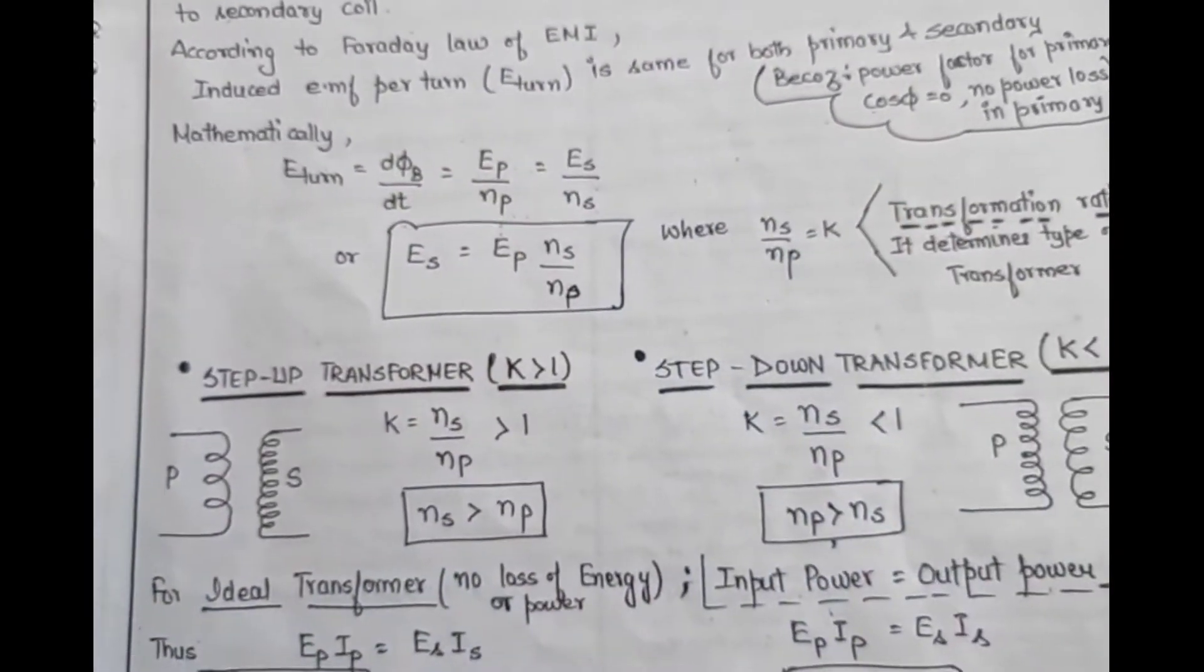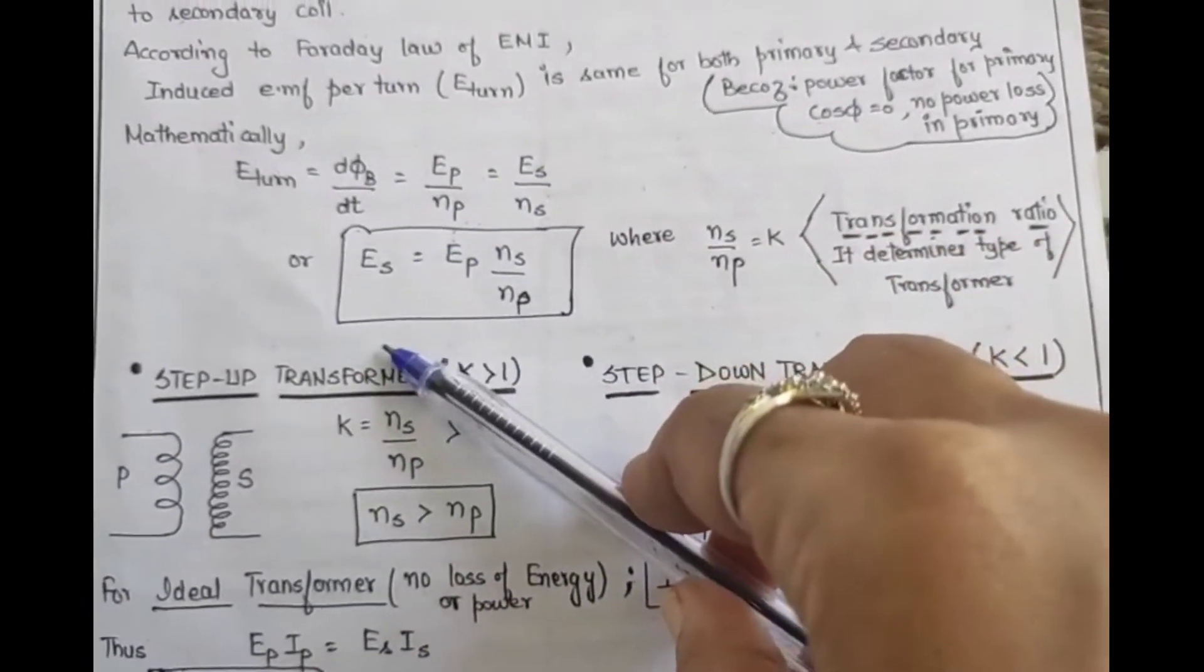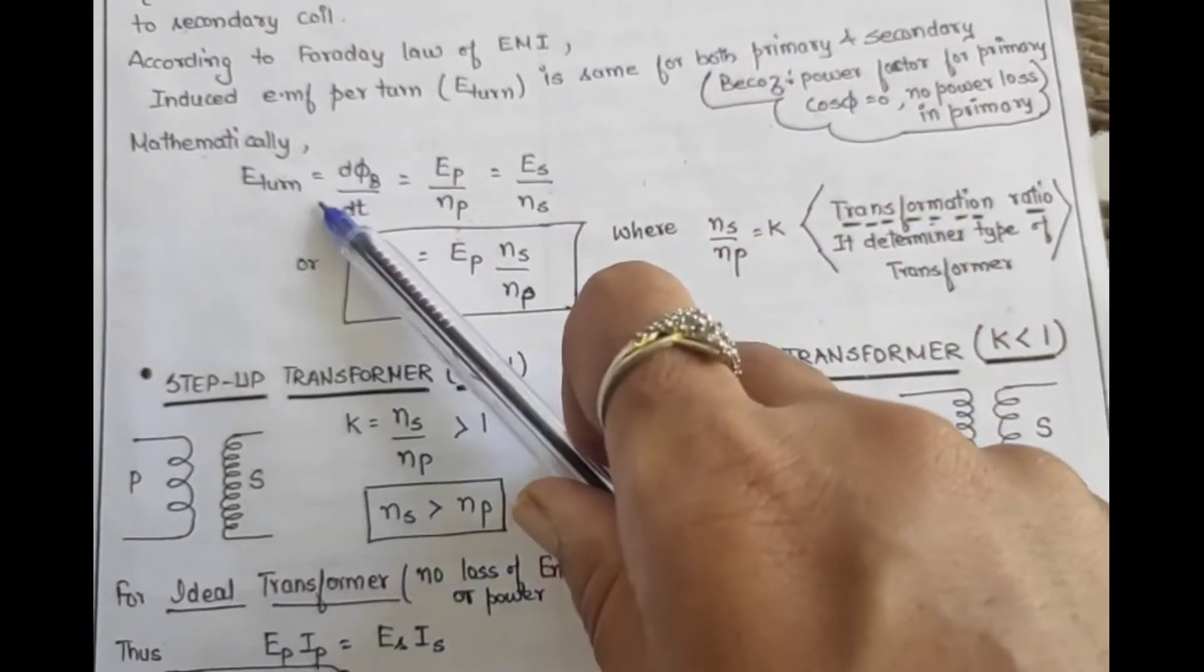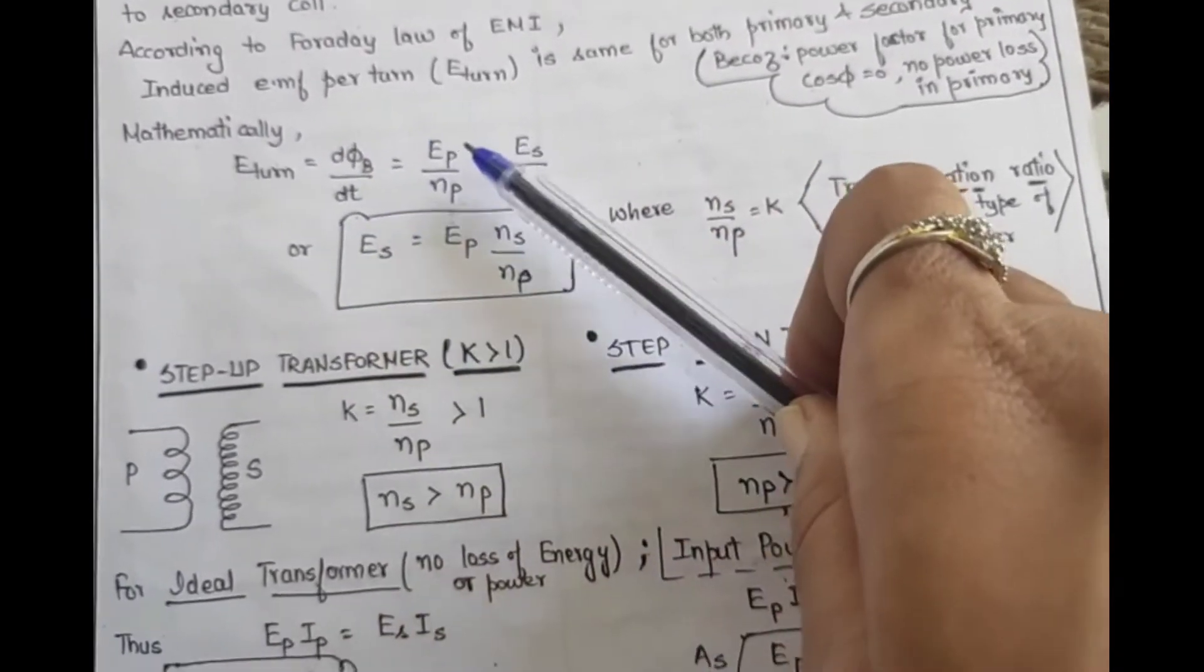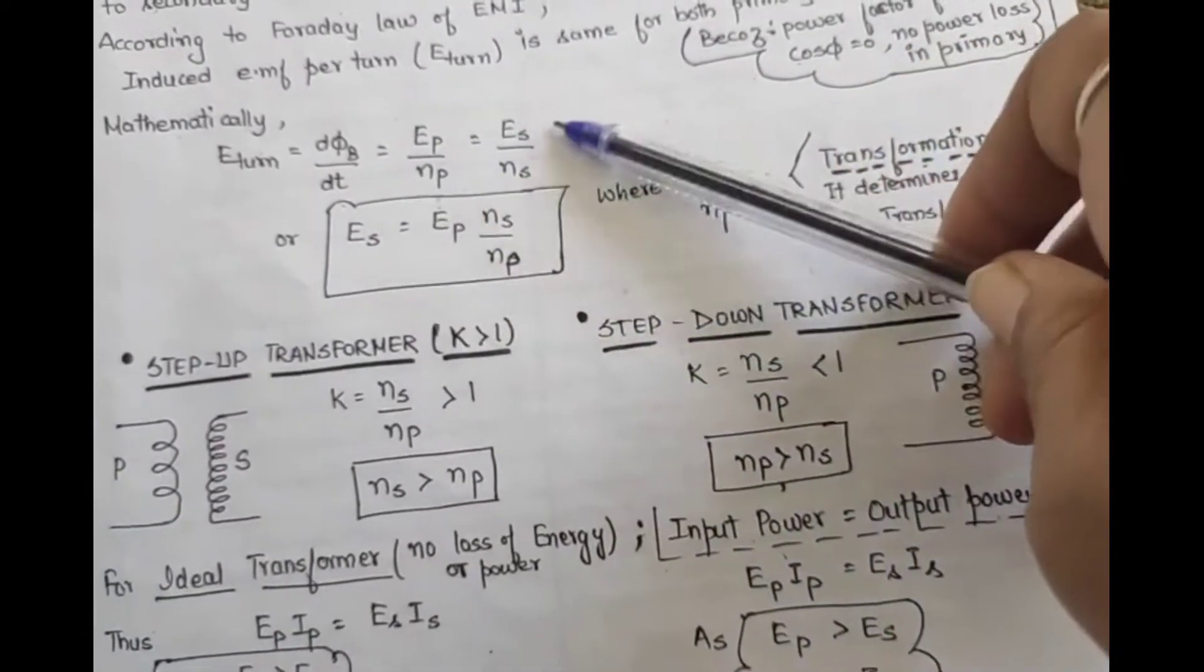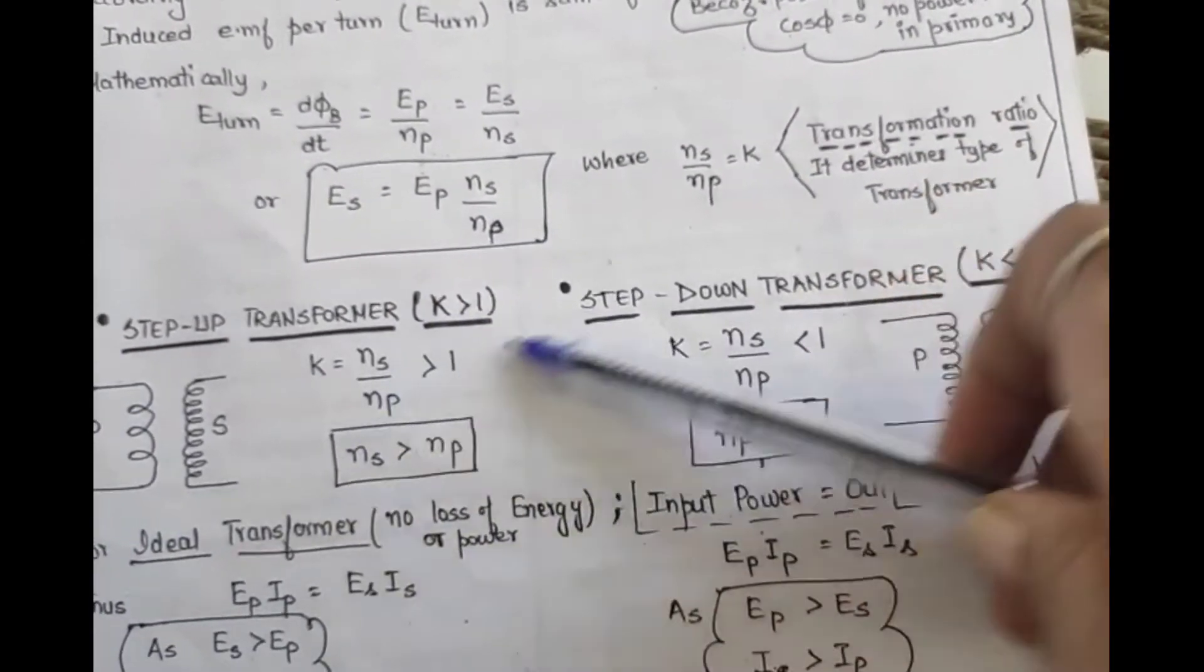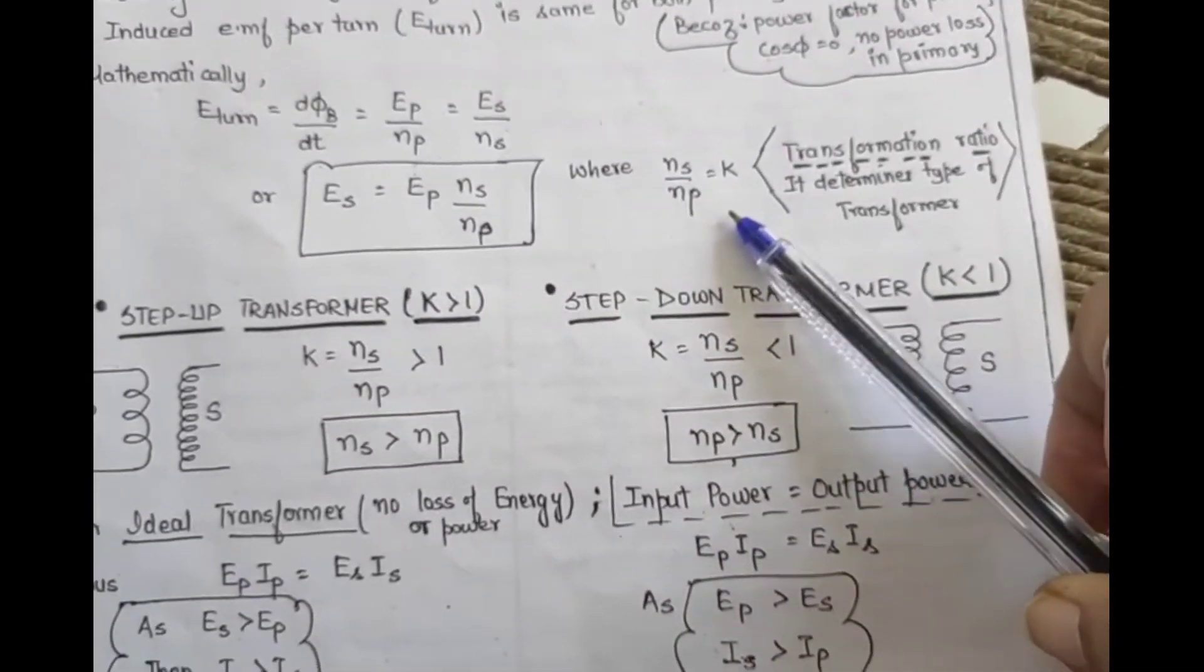According to Faraday's law of EMI, induced EMF per turn in primary and secondary will be same because the transformer we are discussing is an ideal transformer, meaning there will be no energy losses. Induced EMF per turn will be dΦ/dt, that is EP/NP = ES/NS. We got the value of ES, it is EP × NS/NP. There is no mathematical derivation here, it's mostly theoretical.